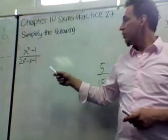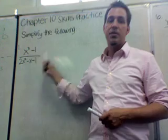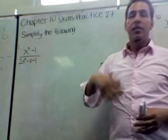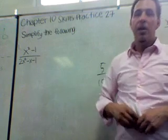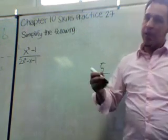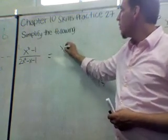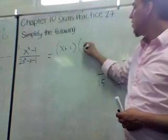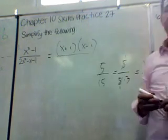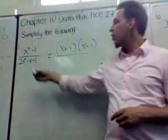The same thing happens with polynomial fractions. For instance, we've got x² minus 1 on the top and 2x² minus x minus 1 on the bottom. If we factor the top and factor the bottom, we'll find something that cancels and we'll get a simplified fraction. x² minus 1 — you have to recognize that's a difference of squares, which equals (x + 1)(x - 1), as we covered in the Chapter 6 review.